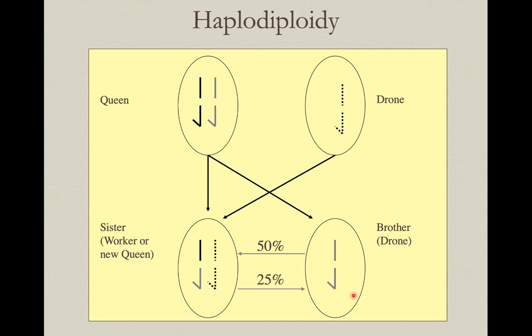Let's say we've got this queen and this drone — that's what the reproductive males are called. The drone can only produce haploid sperm. Brothers don't get any sperm; they're haploid and they don't have a father.